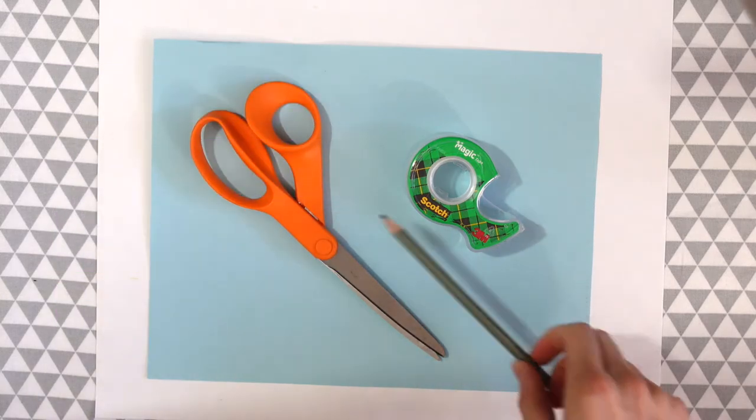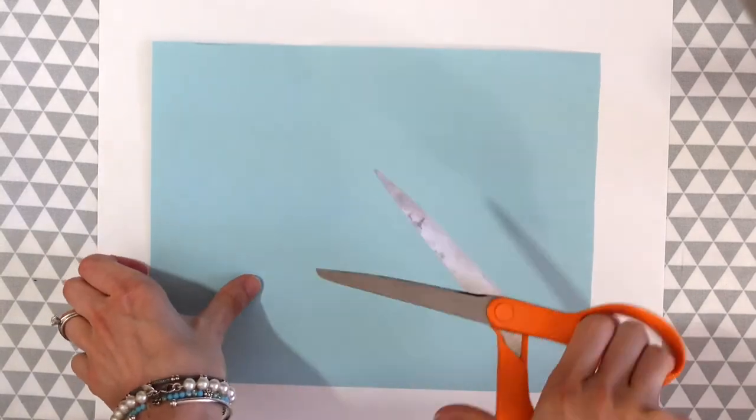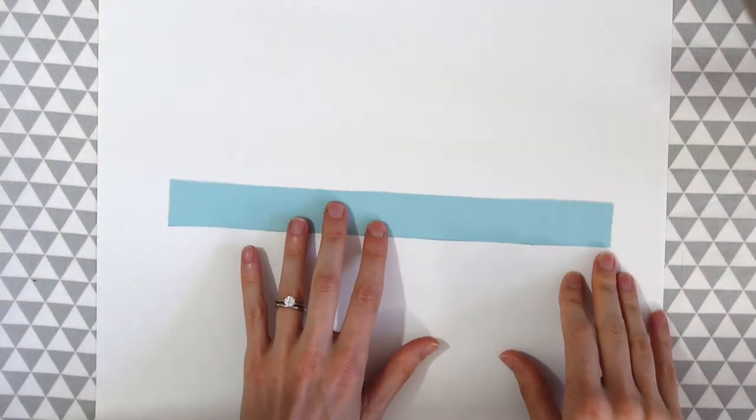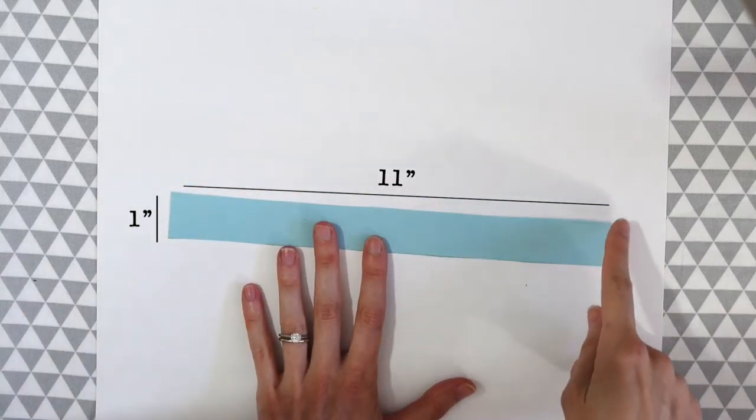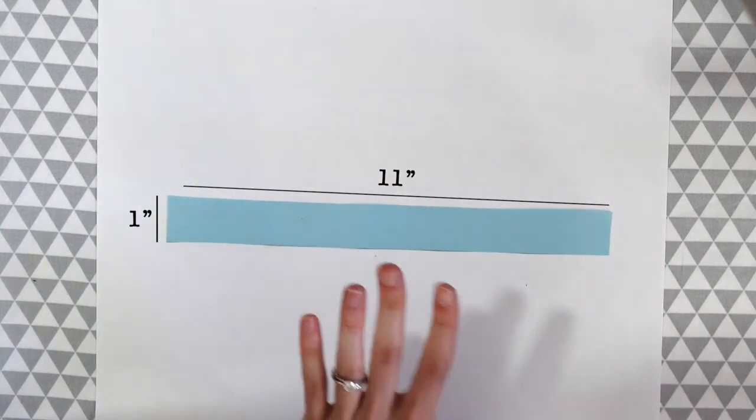So the first thing we're going to want to do is take our computer paper and cut out a rectangle. Cut out a long and skinny rectangle. This is like the length of the computer paper by like an inch, so like 11 by 1 inches.